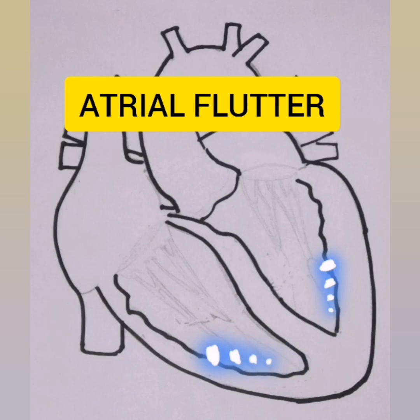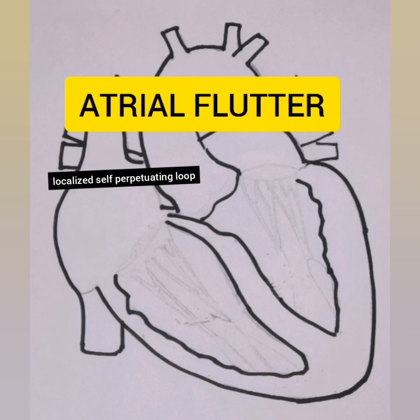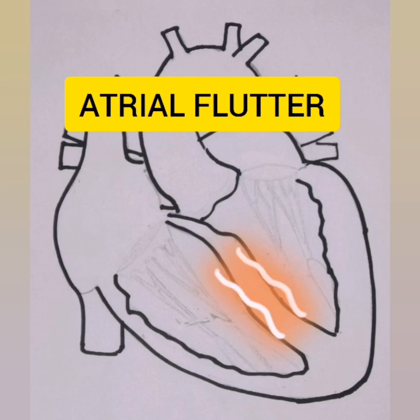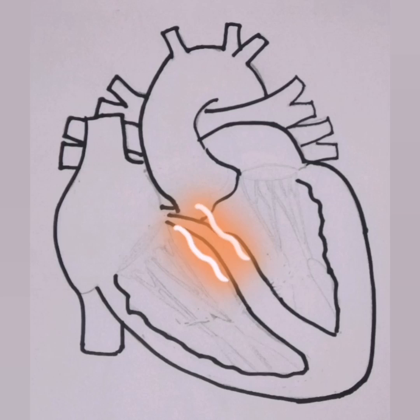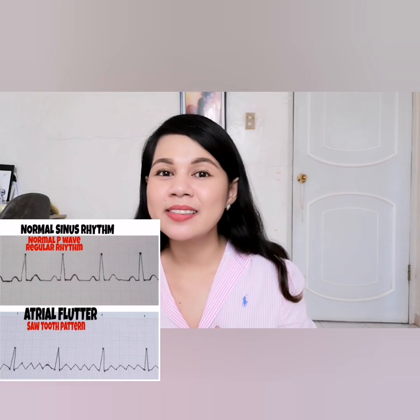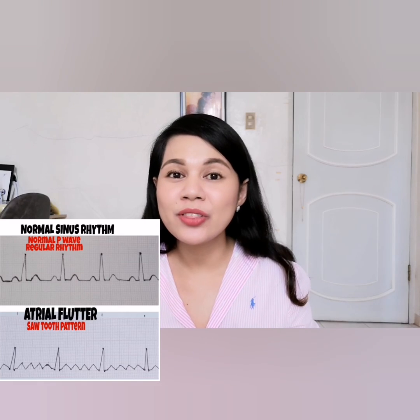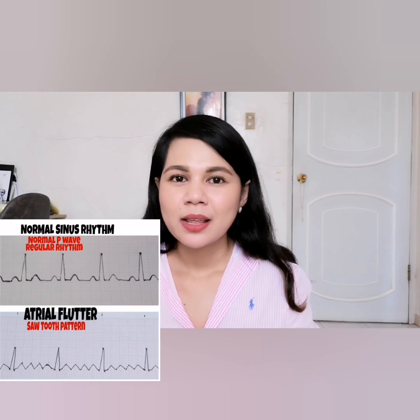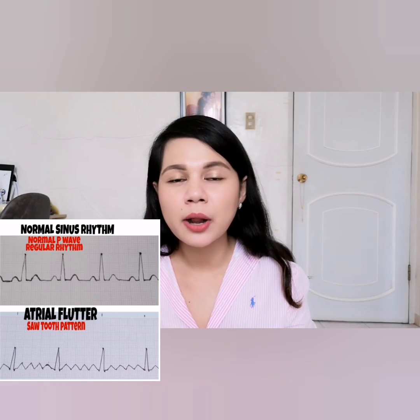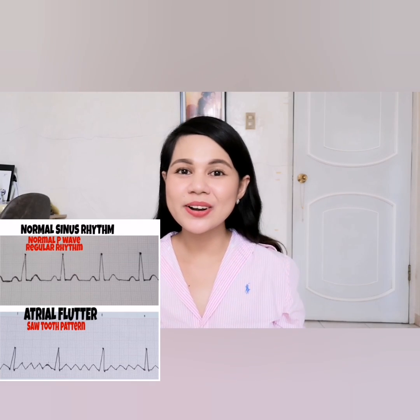Atrial flutter is a common tachycardia that results from a rapid electrical circuit in the atrium. Instead of electrical activity starting in the sinus node, it begins in a large circuit caused by an impulse traveling around in a localized, self-perpetuating loop, causing the atria to beat very rapidly. The ventricular rate is lower because of the refractory properties of the AV node. Atrial flutter is identified by a sawtooth pattern — flutter waves — and a rhythm that is usually regular but can also be irregular.